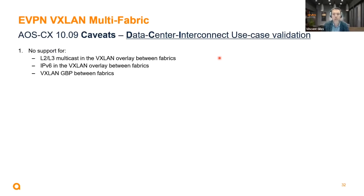First of all, there is no multicast in the solution yet, so no overlay multicast between fabrics. No IPv6 yet — it's purely IPv4. There is no group-based policy as well for the first release of Multifabric in 10.09.